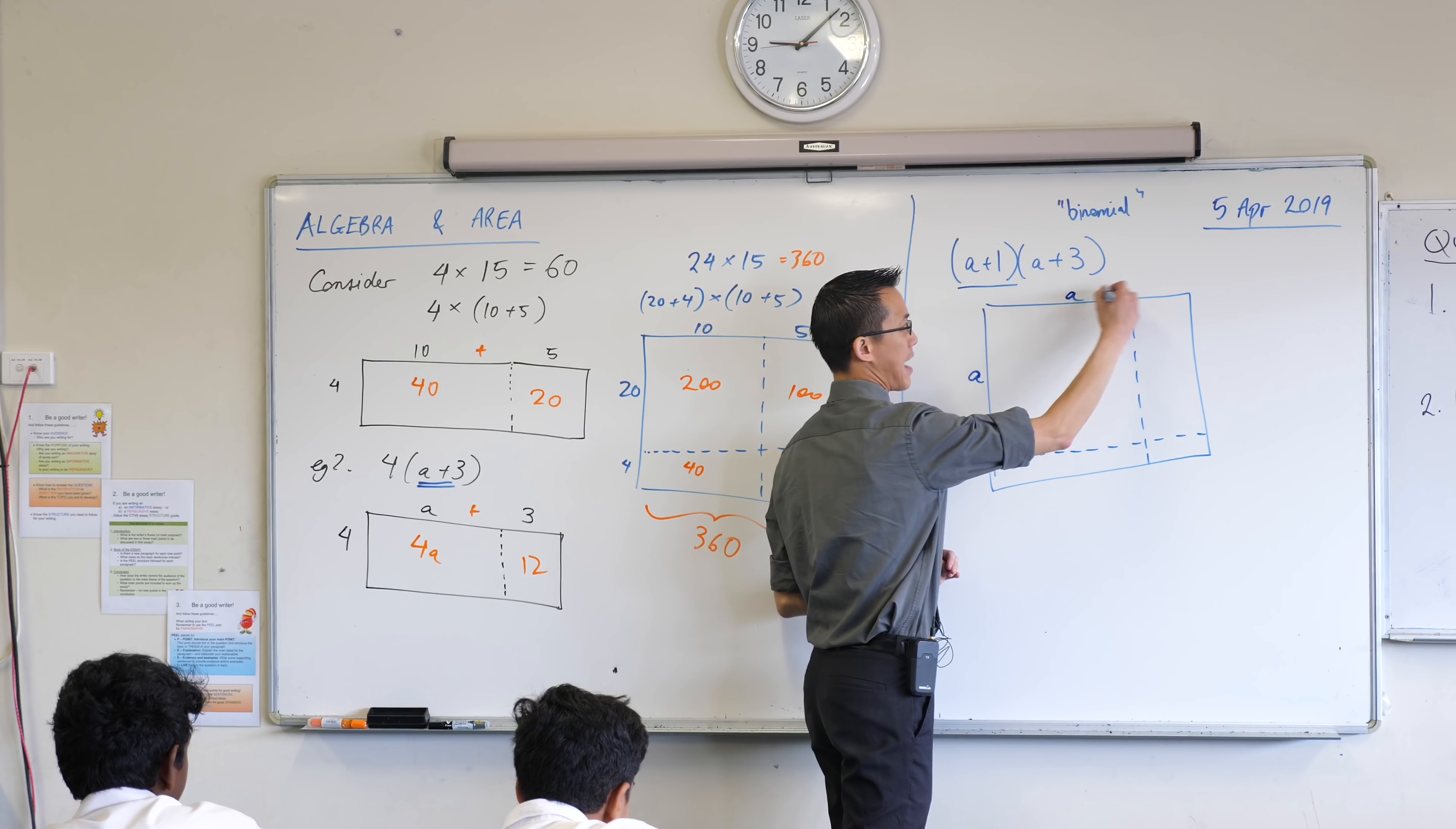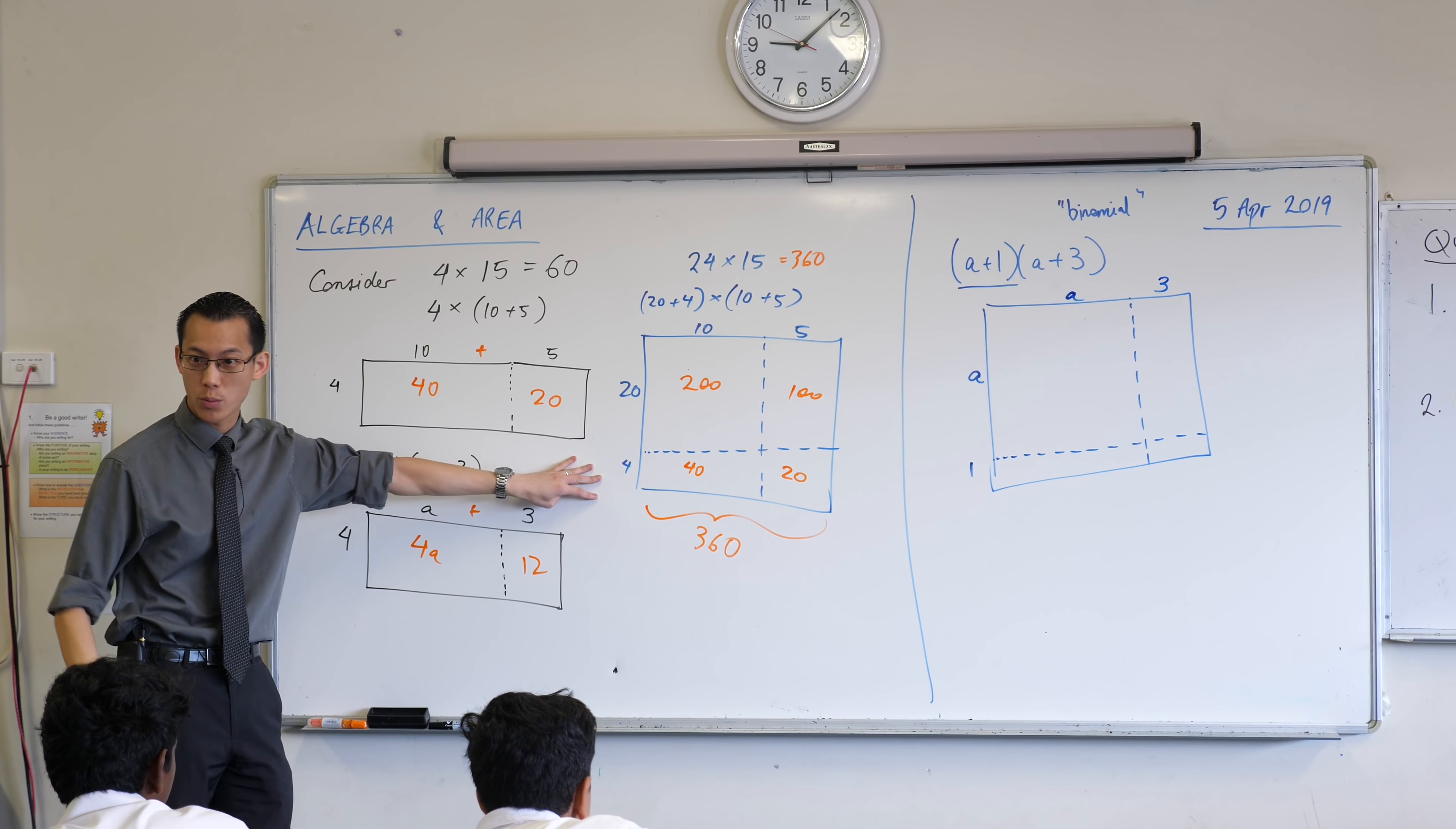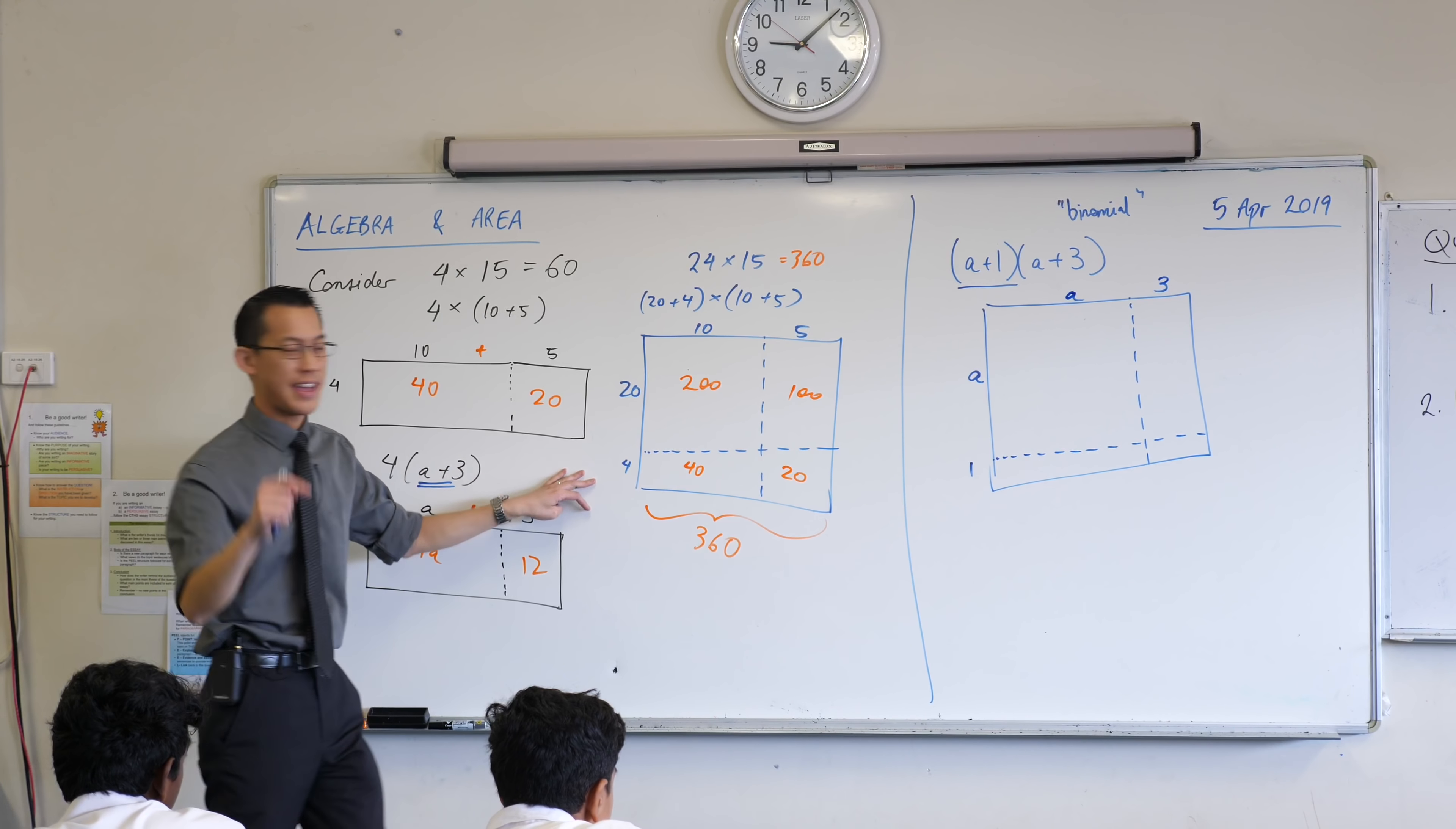And the width, same deal, A, and then there's a 3, so the whole width is A plus 3. And now just like we did with the numbers, we can think about each rectangle individually.